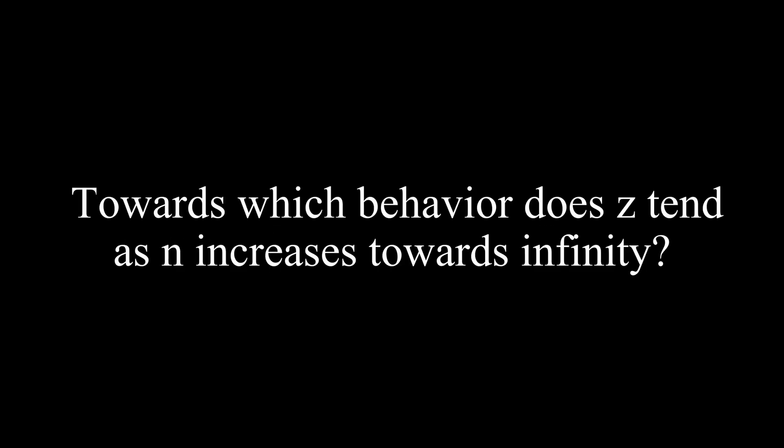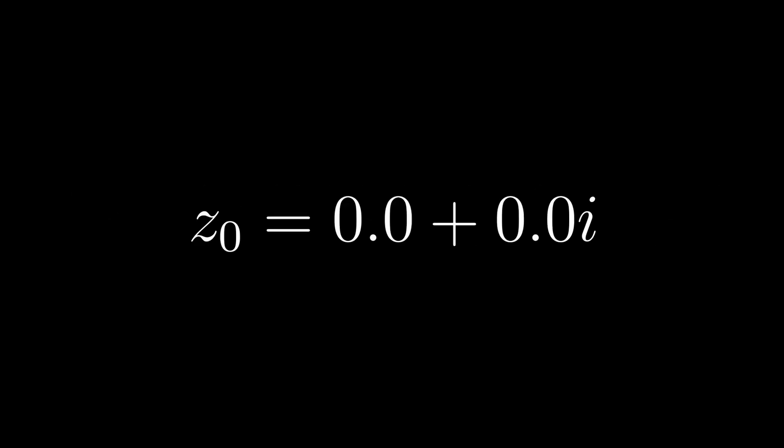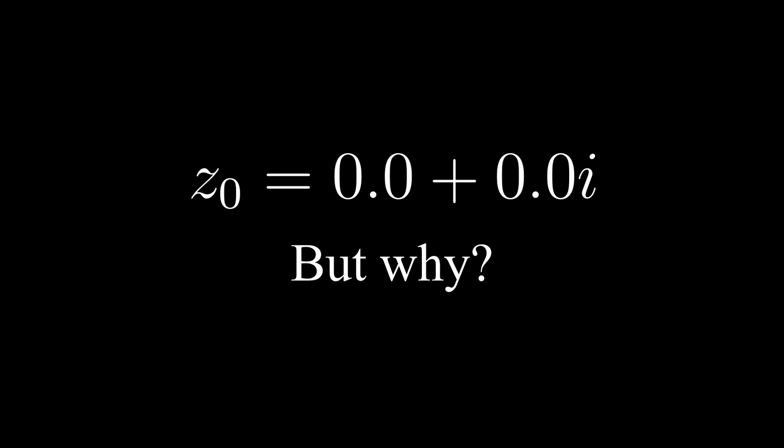Lastly, I want to return to the initial formula once more and for a second think about what it is really telling us. Given an initial value z sub 0 and a constant factor c, how does the resulting sequence of numbers behave? So far, z sub 0 has been fixed at 0. But that's a little arbitrary, right? I mean, if we look at the other famous fractal, the Julia set, here the c term is what is fixed and the z sub 0 varies throughout the image.